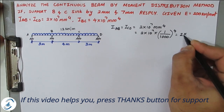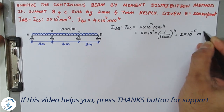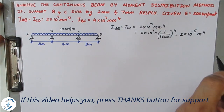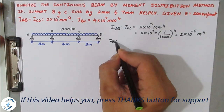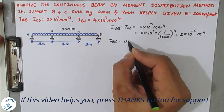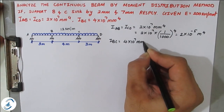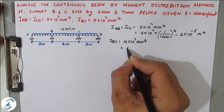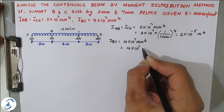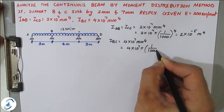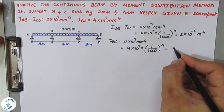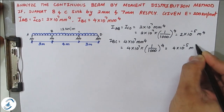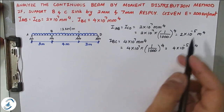This gives I_AB = I_CD = 2×10⁻⁵ m⁴. Similarly, converting I_BC: 4×10⁷ × (1/1000)⁴ gives I_BC = 4×10⁻⁵ m⁴. Now the next step is to convert E.